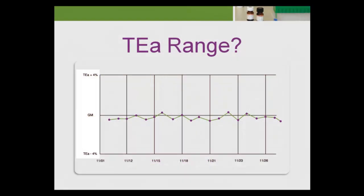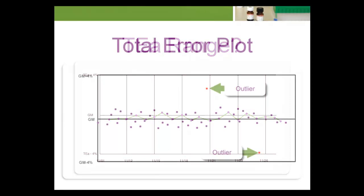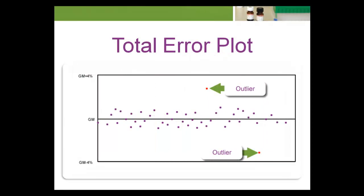The y-axis of the TE plot is the TEA range. The x-axis displays the test date for each plotted point. Lastly, QC values from the Levy-Jennings chart are plotted onto the total error plot. Points rejected by the SPC rules are highlighted.